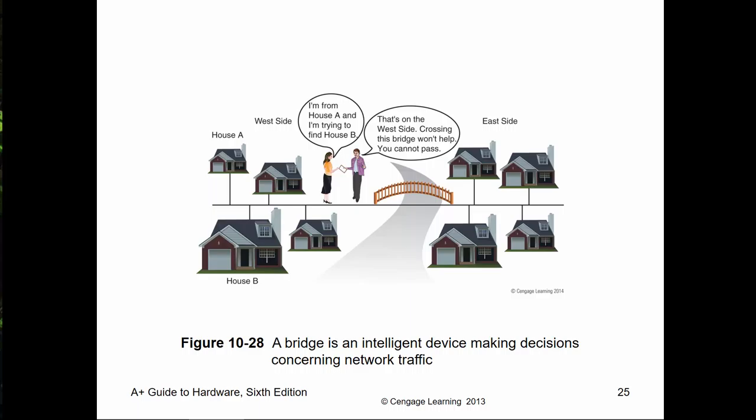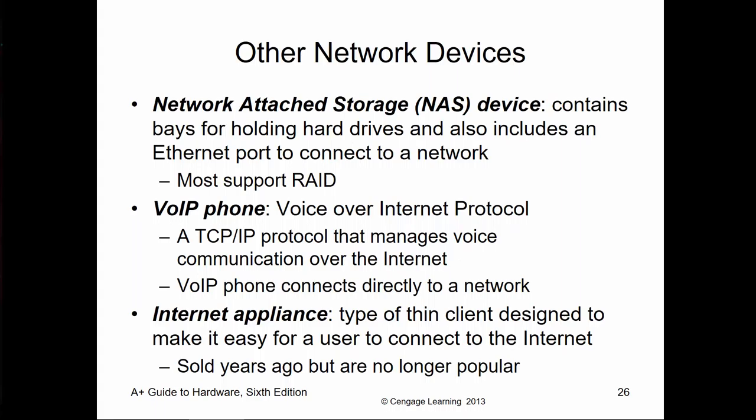A router's primary job is communicating between one network and another — it does path selection. Other devices could be things like a NAS or a SAN — storage on the network. It could also be things like VoIP, a voice over IP, where we're sending voice and/or video over the network.